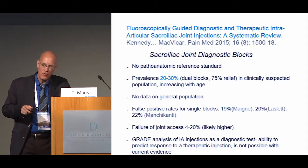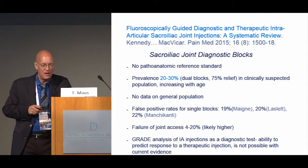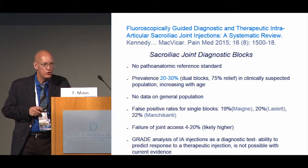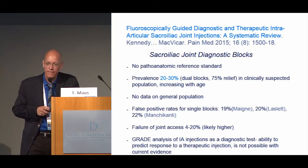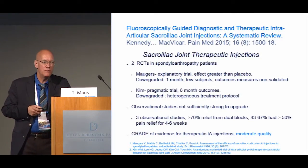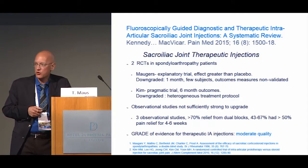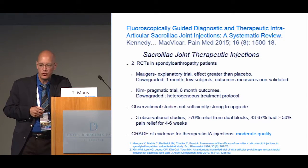If you don't see that very thin arthrogram, it's not in the joint. Using GRADE analysis, it was not possible to grade the evidence for diagnostic sacroiliac joint injections — the literature simply is not strong enough. For sacroiliac joint therapeutic injections, there are two RCTs, all in spondyloarthropathy patients — not ideal trials, one explanatory and one pragmatic. There are a number of observational studies, not sufficiently strong to upgrade it, so it remains a moderate quality of evidence for therapeutic sacroiliac joint injections.